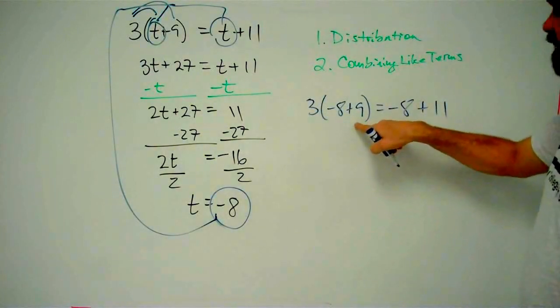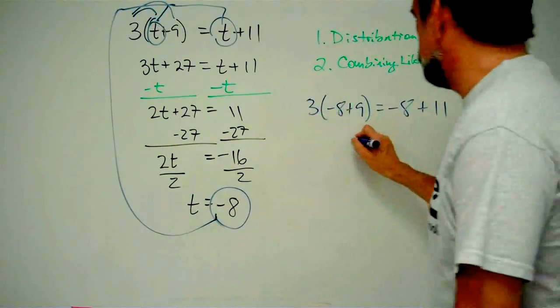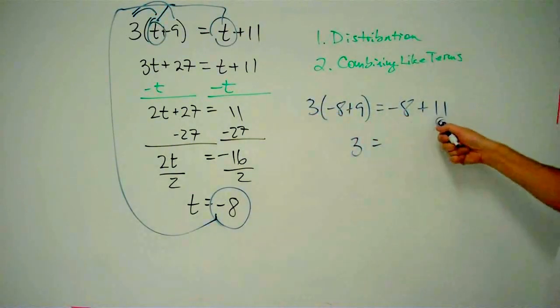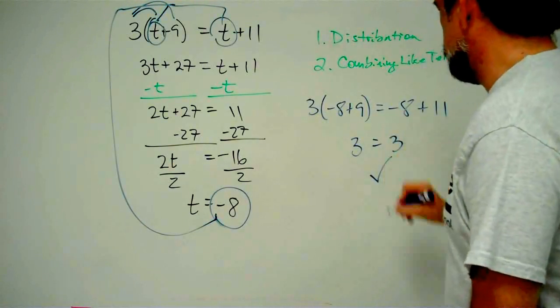Well, negative 8 plus 9, that's just 1. And 3 times 1 is just 3. And negative 8 plus 11, also 3. I say, yes, that works just fine.